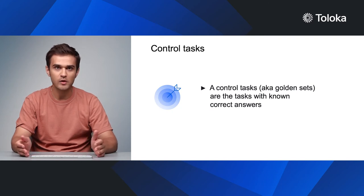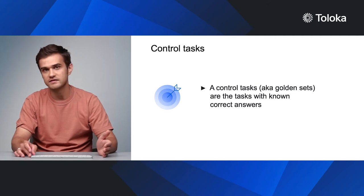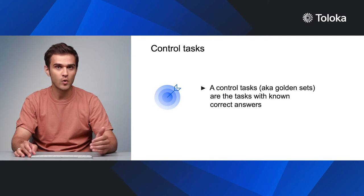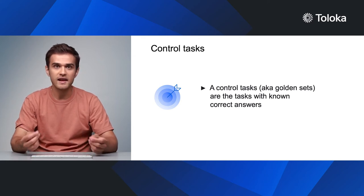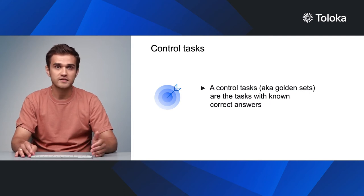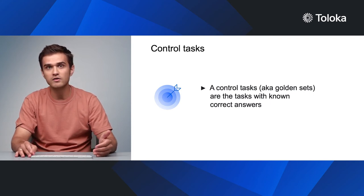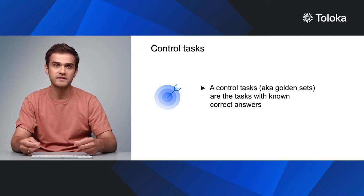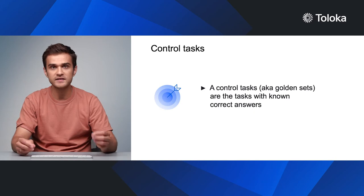Control tasks, also known as golden sets, are tasks with known correct answers. The control task is presented to the performer as a normal task, without letting them know there is a special check involved. By adding control tasks to your project, you can work out the percentage of correct responses for the project and the percentage of correct responses for individual performers. Control tasks are only applicable to questions where there is a single correct answer.